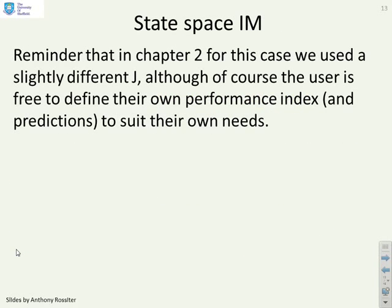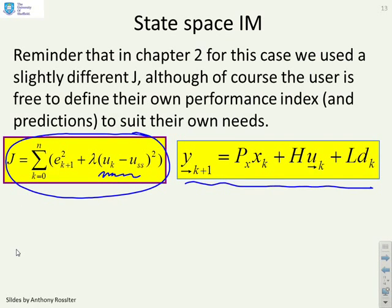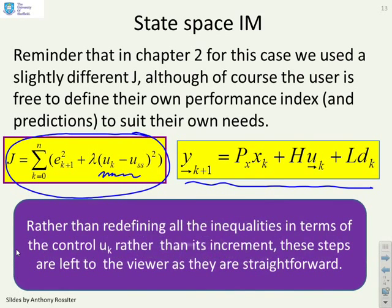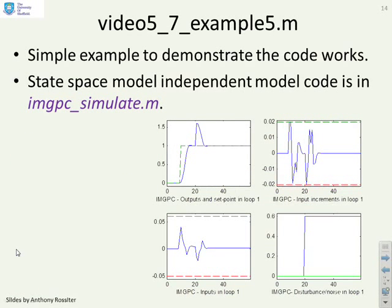Now, just for completeness, in Chapter 2, we also looked at independent models based upon state space. If we had a state space model, we tended to prefer a performance index a bit like this. So we used the deviation of u from the steady state. You don't have to, but we tended to. And you had predictions a bit like this. Now, rather than going through all the development in this video of how do I do the constraints, how do I do this, how do I do the other, with this form of model, I'm not going to do that. I'm going to leave that to you. But there is some code provided.